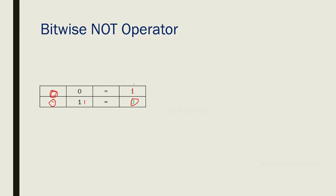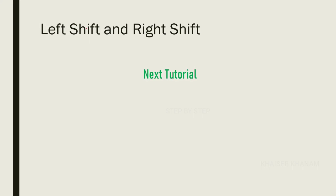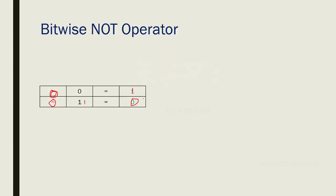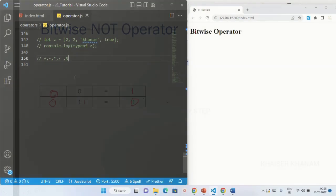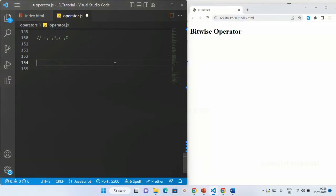Now we will see examples on these operators, then we are going to understand more about bitwise AND, OR, NOT, XOR, and finally left shift and right shift which we will see in the next tutorial. Let's see the practical examples for all these operators. I will write a comment here: bitwise operator. First we are going to see about bitwise AND.